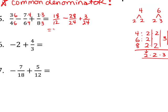Now we can just combine our numerators: 18 minus 28 plus 3 gives us negative 7 over 24. You can also look to see if there's anything to simplify here, but there isn't.